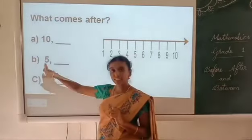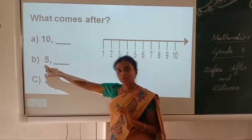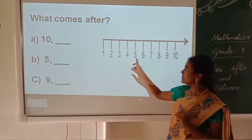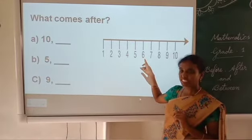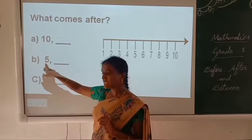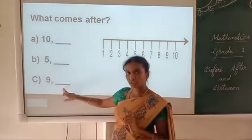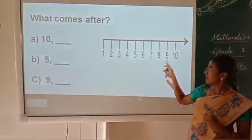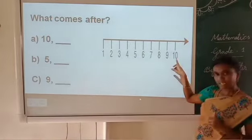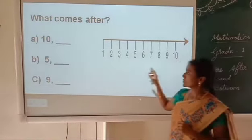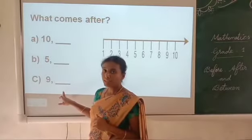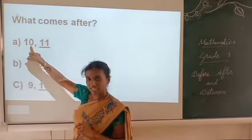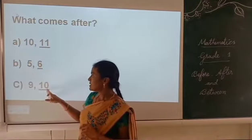Look at the second one: number 5. Which number comes after 5? Point out number 5 on the number line — 6 comes after 5. Third one: 9. Point out number 9 — 10 comes after 9. Let's check our answers: 11 comes after 10, 6 comes after 5, 10 comes after 9.